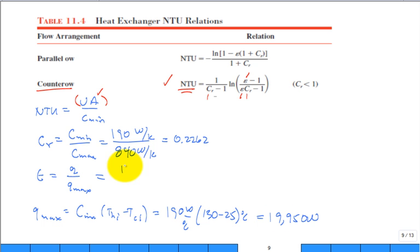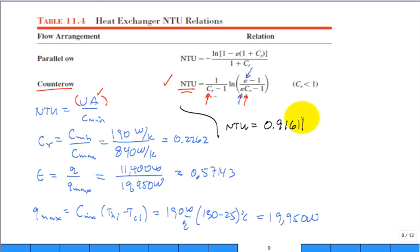So we had 11,400 watts, the actual, divided by 19,950 watts. Doesn't it seem like you're going a completely different route? We're going to get the same answer. But we're using the effectiveness NTU method. This comes in at 0.57143. So 57.143%. So put that in for the effectiveness there. Put in for the C sub R there. And you calculate the number of transfer units. It comes in at 0.91611.